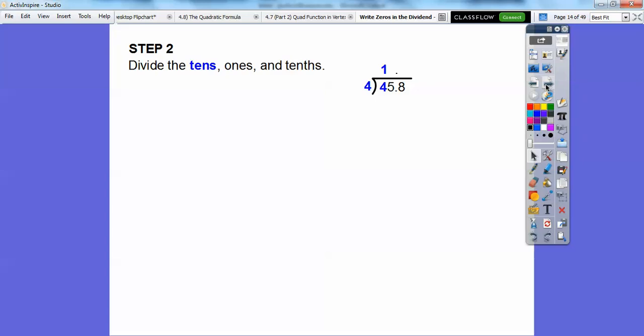Four goes into four tens one time. We're dividing into the tens, then we multiply. Four times one is four, then we subtract, and four minus four is zero. We slide down the next digit, that five. Now we divide the ones. Four goes into five one time. Multiply one times four to get four, then subtract again. Five minus four is one. Now we slide down the next digit, the eight right there.